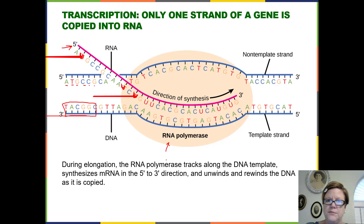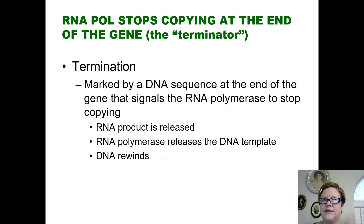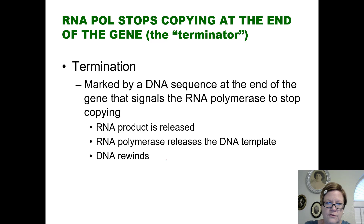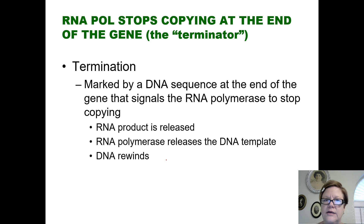The RNA polymerase starts at the promoter and copies until it gets to a section called the terminator — a certain sequence of nucleotides that tells the RNA polymerase to stop. There's a signal in the DNA that tells it where to start and where to stop. This is not replication — it's just copying one gene, one strand, from the promoter to the terminator. At that point the RNA product is released, the RNA polymerase is released, and the two strands of DNA come back together as if nothing happened. The DNA is not affected by transcription.